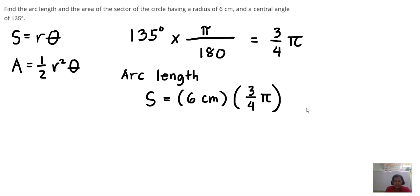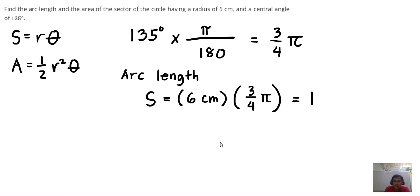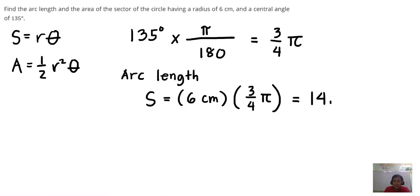So S equals, just solving this one, 6 times 3 over 4 is equal to 9 pi over 2, or 9 over 2 pi, or in 3 decimal places, this is 14.137 cm.